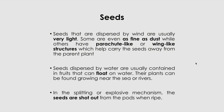Seeds dispersed by water are usually contained in fruits that can float, and the plants are found growing near the sea or rivers. In the splitting or explosive mechanism, the seeds are shot out from the pods when ripe, dispersing them far away from the parent plant.